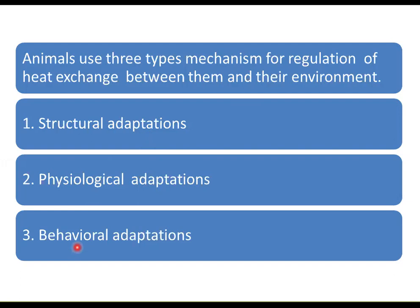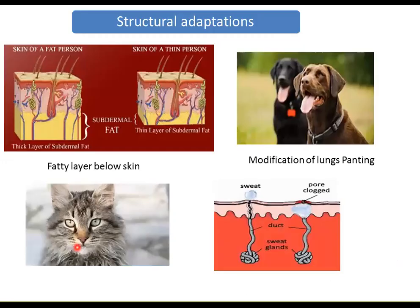Let us discuss each one by one. First, structural adaptations. These are long-term, permanent changes in the structure of the body — in the anatomy of the animal. Our book mentions four types of structural adaptations.